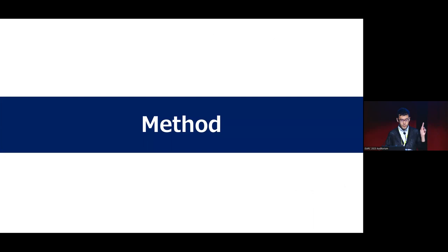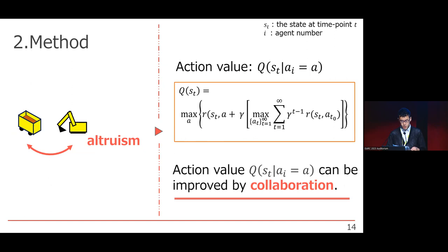The next is the method part. First, we try to write down the function of altruism in a calculation model. We use Q-value approach. Q-value defines how much value one's action has in a certain situation.